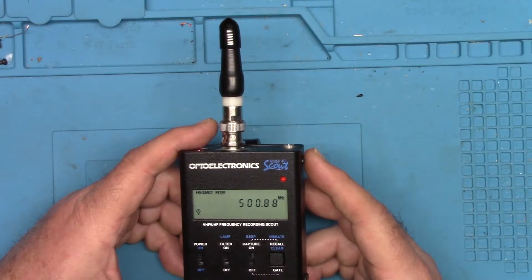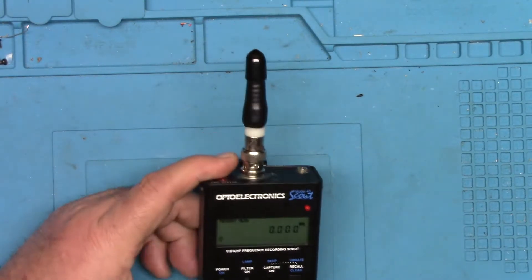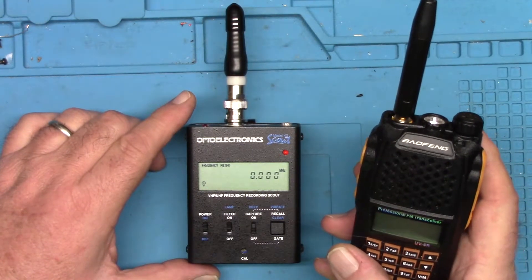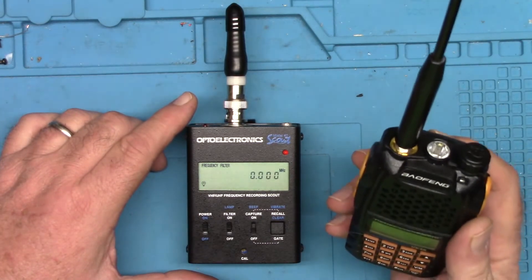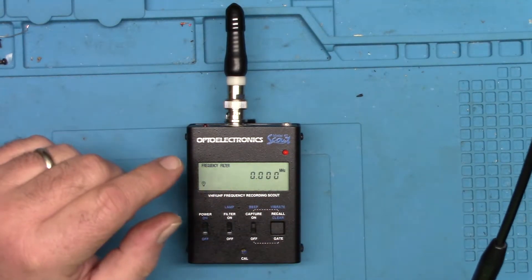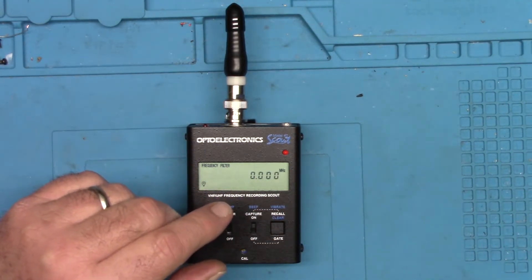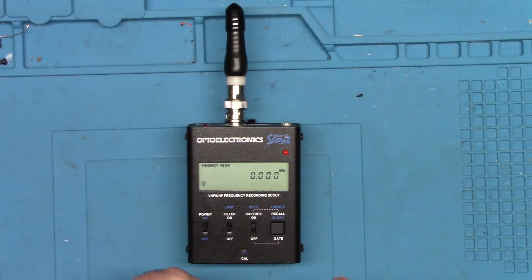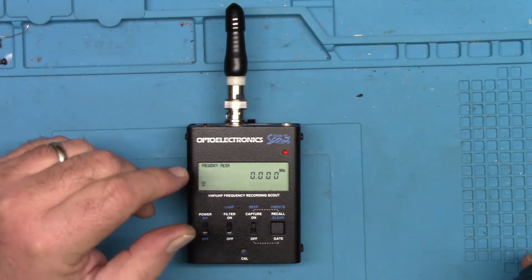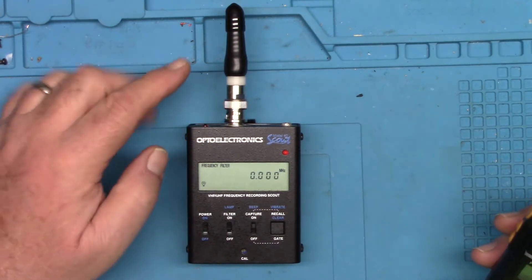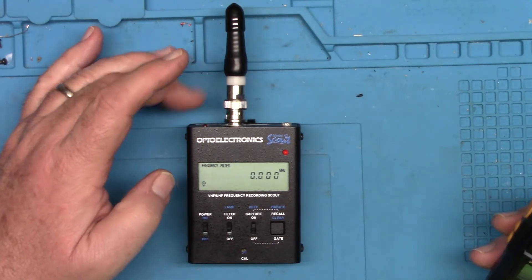We'll clear out whatever's in there, and then I have a trusty BaoFeng here. This is my UV-6R, which as far as BaoFengs go is a decent little radio. When you add a very good antenna to it, it makes it even better. This is a Diamond 77 CA antenna, and it's an excellent two meter 440 antenna, but that's a different show. So anyway, this guy's got a standard stubby antenna on it.